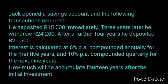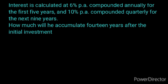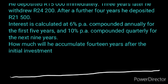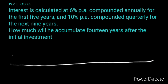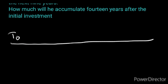Here is the second level. Jack opens a savings account and the following transactions occurred. He deposited $15,000 immediately — so at T0, we put $15,000. Three years later he withdrew $24,200, so at T3 we put minus $24,200. It is minus whenever it is a withdrawal, and plus whenever it is a deposit. Notice that the withdrawal is placed on a separate line because every transaction needs its own arrow continuing to the end.